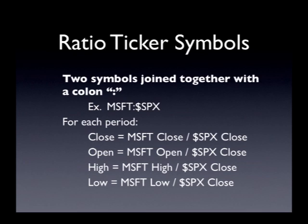When we see a ticker symbol that has a colon in it, we do the following arithmetic: we take the open, high, low, and close of the first symbol and divide each of those by the close of the second symbol. It turns out if you did the open by the open, and the high by the high — if you did each one — you would end up with invalid candles.